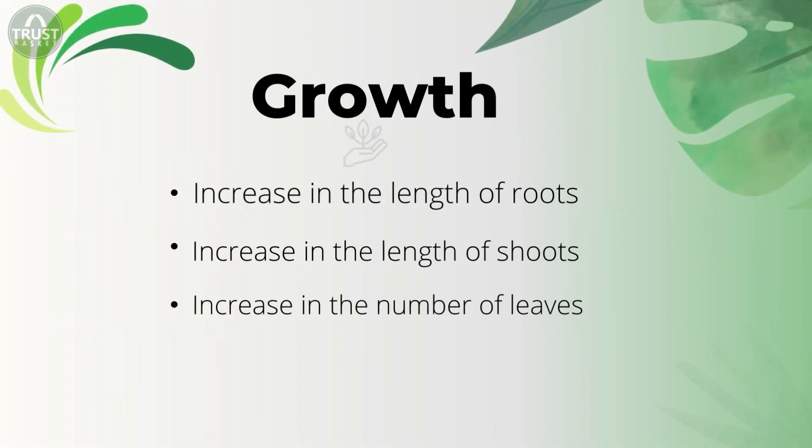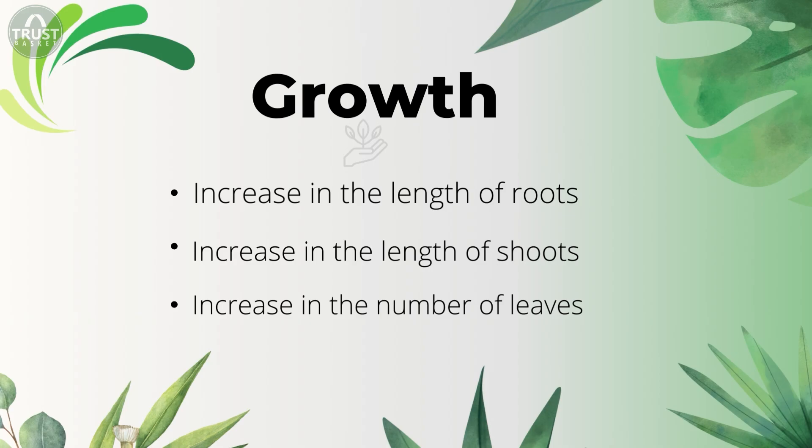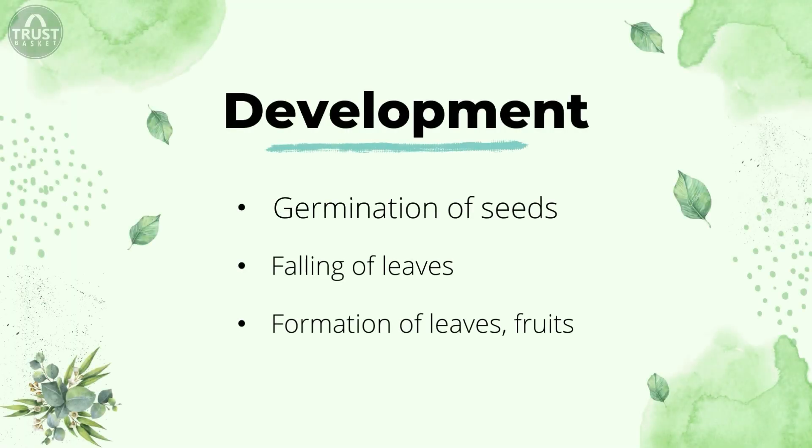The two main internal factors that control the growth and development of plants are nutrition and hormones. Growth includes increase in the length of roots and shoots, increase in the number of leaves, etc. Whereas development includes the germination of seeds, falling of leaves, formation of leaves, fruits, etc. We all know how nutrients are important for plant growth, so in this video I'll let you know how plant hormones are important for the development of plants.